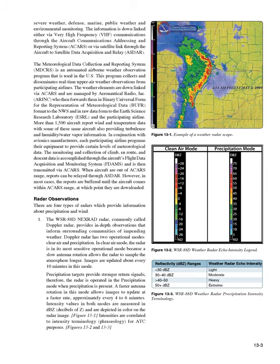8. Sky condition — always reported in the sequence of amount, height, and type or indefinite ceiling/height, vertical visibility (e.g., BKN008 OVC012CB VV003). The heights of the cloud bases are reported with a three-digit number in hundreds of feet AGL. Clouds above 12,000 feet are not detected or reported by an automated station. The types of clouds, specifically towering cumulus (TCU) or cumulonimbus (CB) clouds, are reported with their height. Contractions are used to describe the amount of cloud coverage and obscuring phenomena. The amount of sky coverage is reported in eighths of the sky from horizon to horizon.